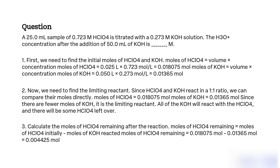Calculate the moles of HClO4 remaining after the reaction. Moles of HClO4 remaining equals moles of HClO4 initially minus moles of KOH reacted. Moles of HClO4 remaining equals 0.018075 mol minus 0.01365 mol equals 0.004425 mol.